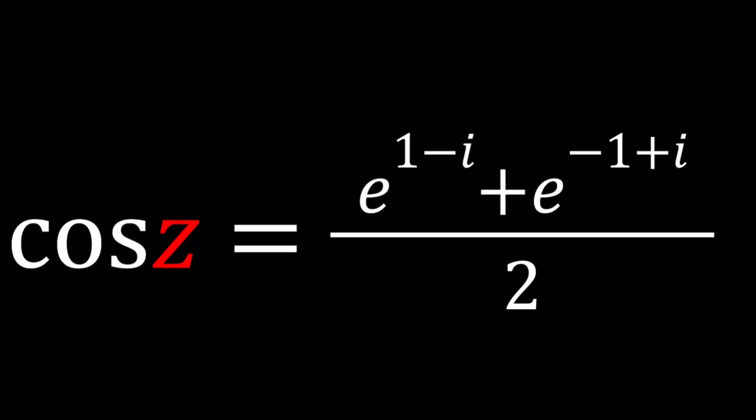Whenever you have cosine with z, which is a complex number, you should remember Euler's formulas. Let's go ahead and go through them — I also went over these in lecture videos. If you want to learn more about these, go ahead and check out those lecture videos.